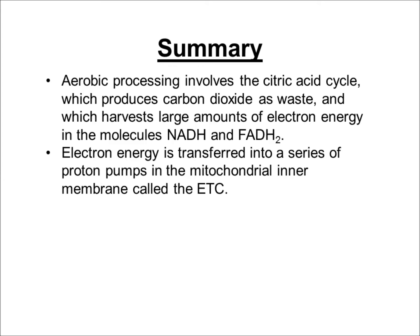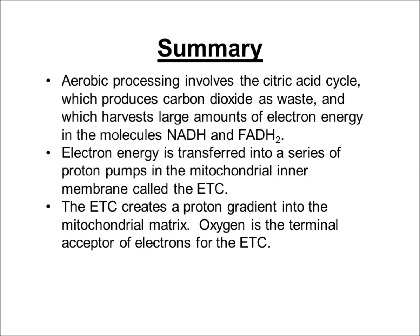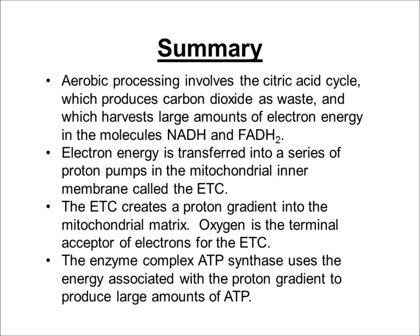That electron energy is harvested when those electrons are transferred into the electron transport chain of the mitochondrial inner membrane, which contains proteins that act as proton or hydrogen ion pumps, creating a hydrogen ion gradient from the intermembrane space into the mitochondrial matrix. Oxygen serves as the terminal acceptor for electrons in the electron transport chain. The enzyme complex ATP synthase then allows hydrogen ions to flow along their gradient, using the energy stored in that gradient to produce large amounts of ATP by adding phosphate molecules to ADP.